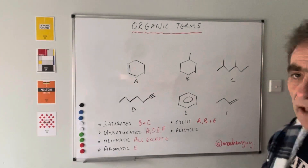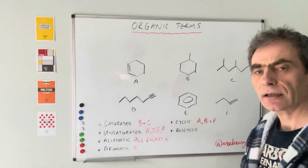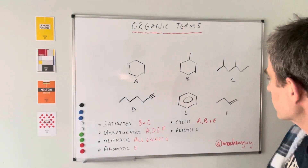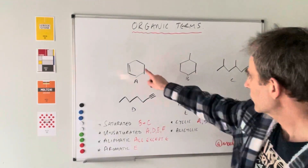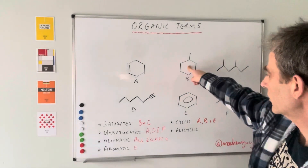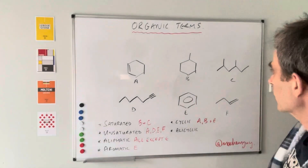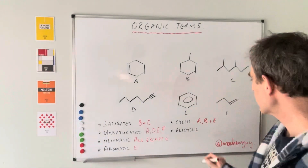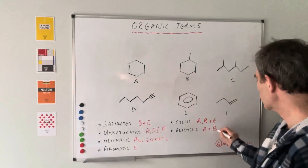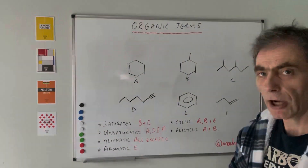Alicyclic ones are all the cyclic ones that are aliphatic rings — in other words, that one and that one, but not that one. So A and B. Hope that was helpful — see ya, bye!